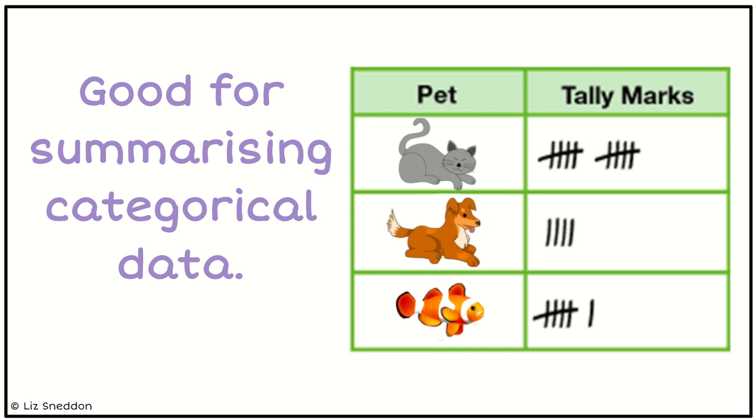For example, you can see that we've got different pets—cats, dogs, and fish—and those are all groups or word answers. The tally marks themselves are a way of us recording the data that we collect from questionnaires or surveys.